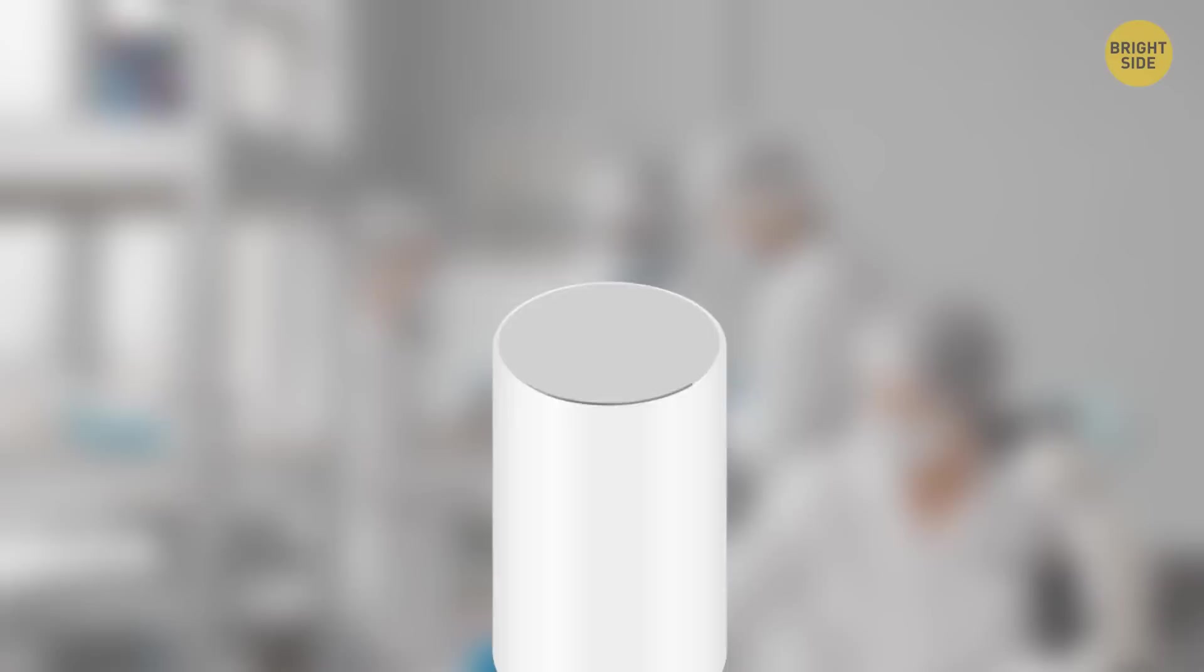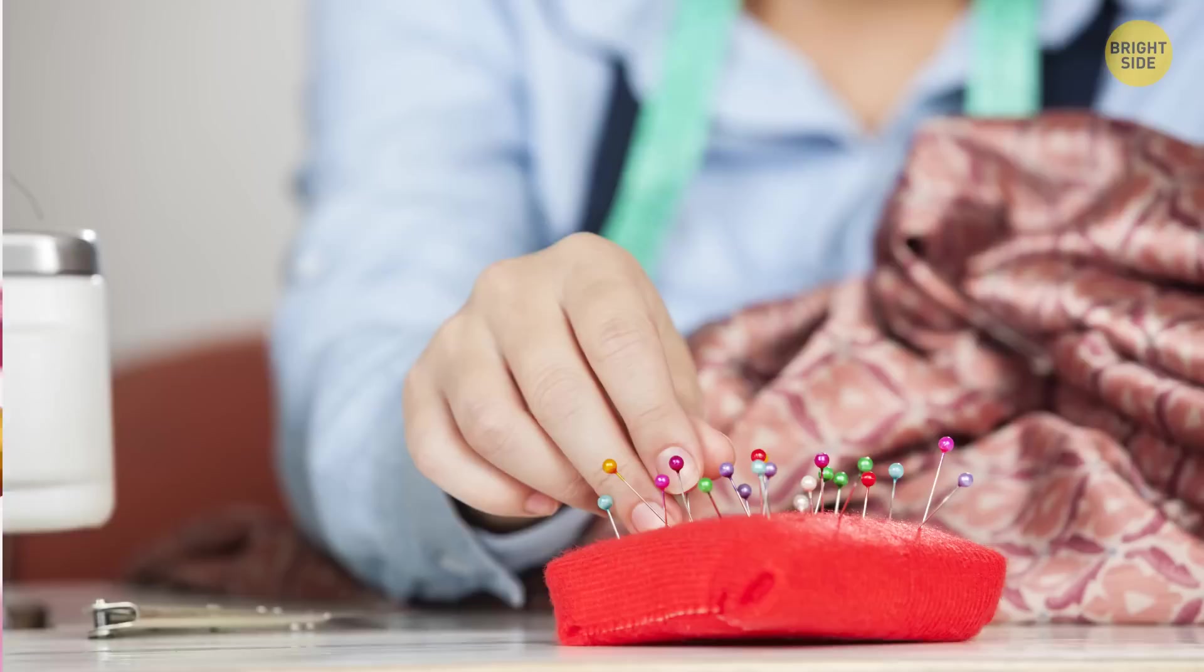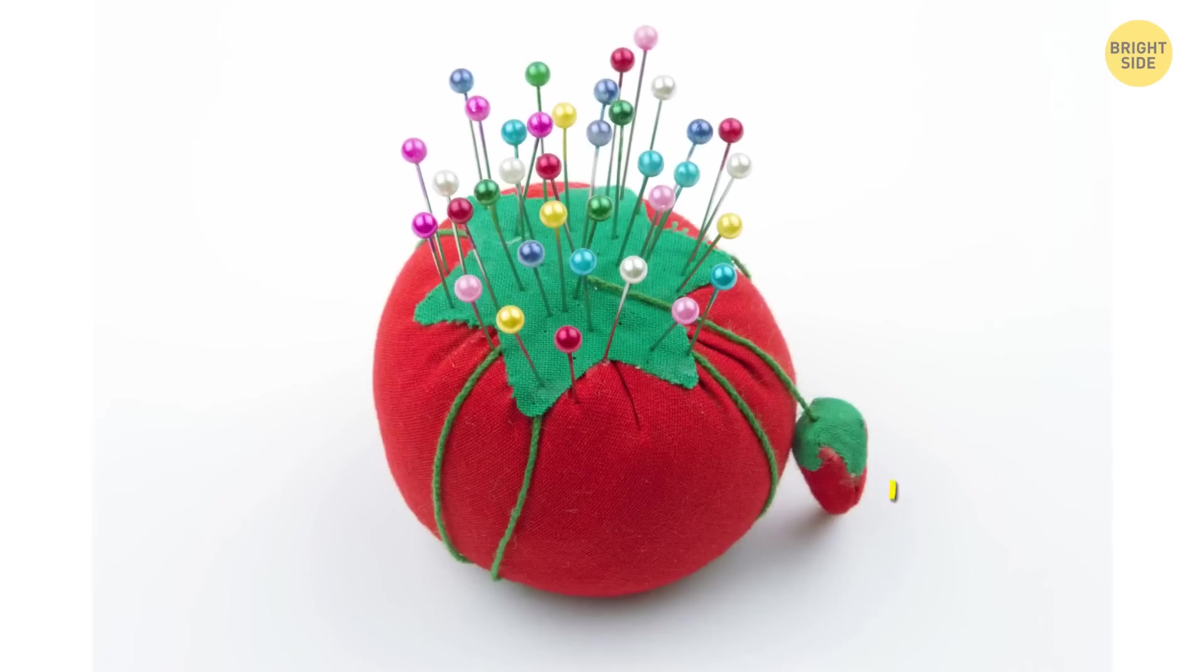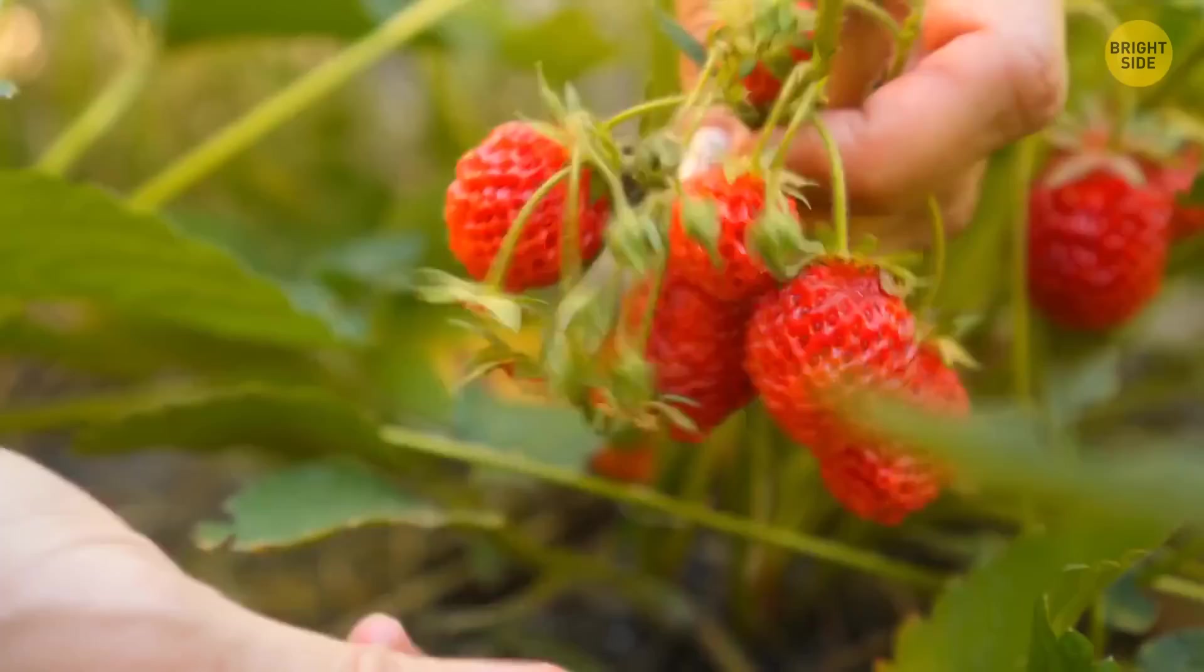You can find a pincushion in just about every household. And strangely, it's always in the shape of a tomato. Ever wondered about that little strawberry dangling from the top? I'm no biologist, but I'm quite sure that strawberries don't grow on tomatoes. That little thing's for the needle you're currently using, so you don't lose it in that big pile you have.